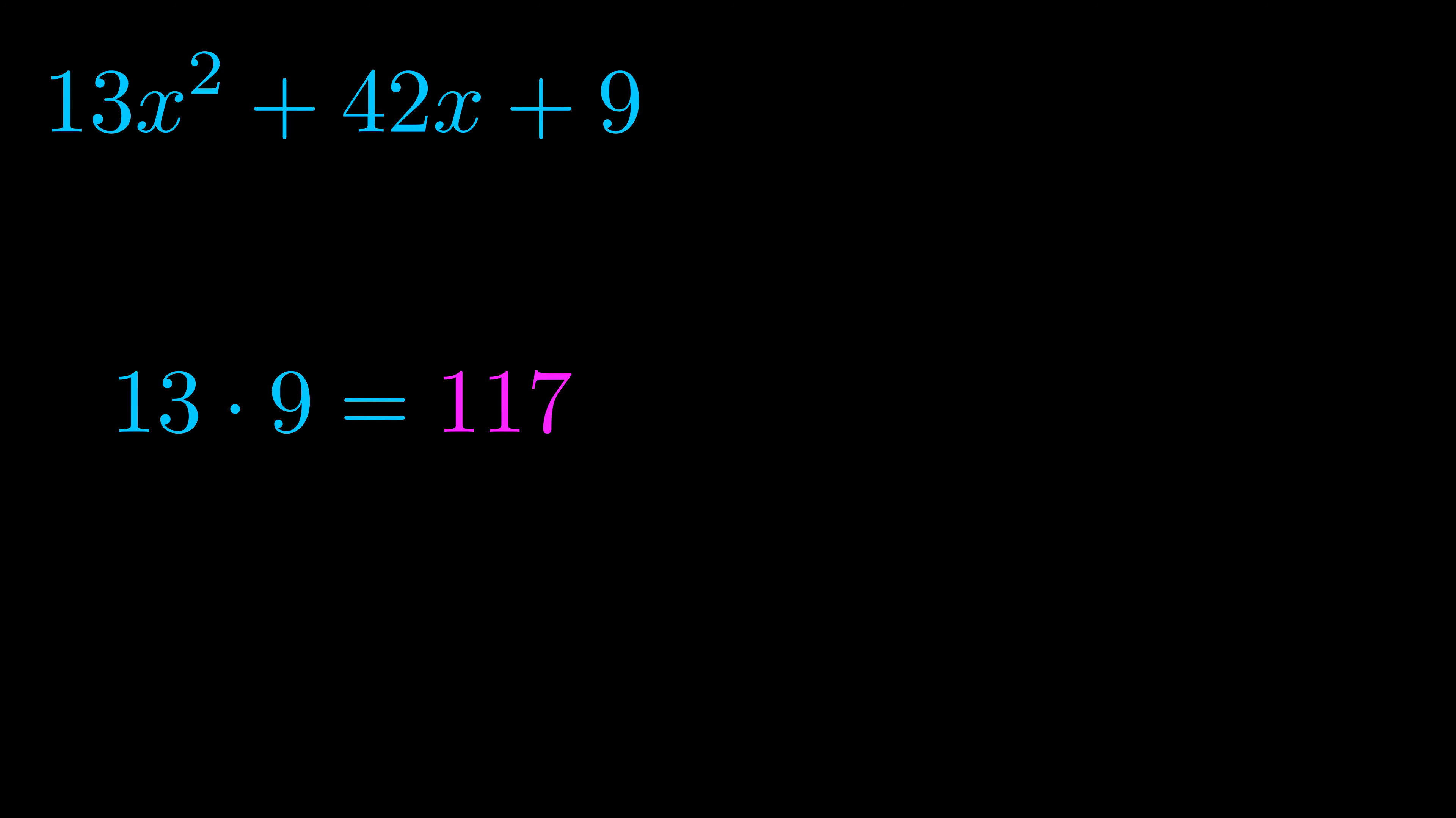Step two is to try to find all of the pairs which multiply to this number. Now it turns out you don't really need to find all of them but go ahead and write down as many numbers as you can that multiply to the magenta value for now. Pause the video and resume when you're ready to continue.